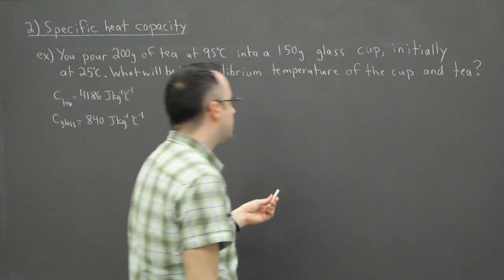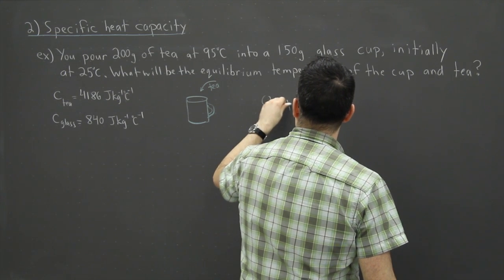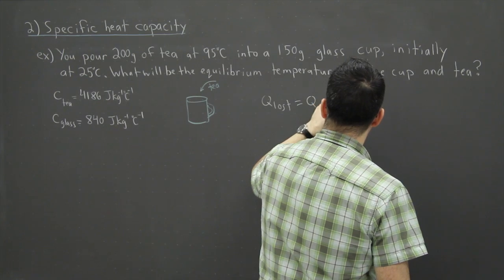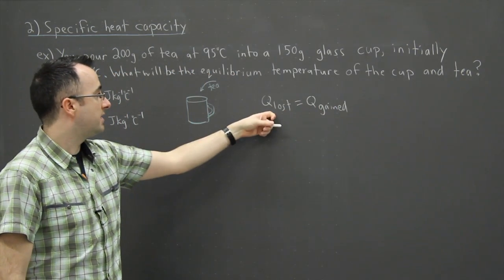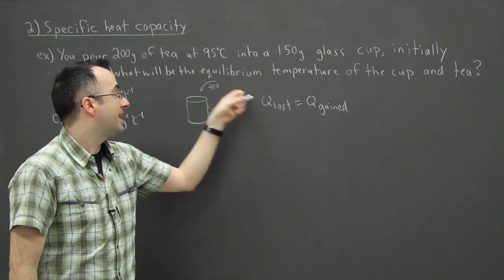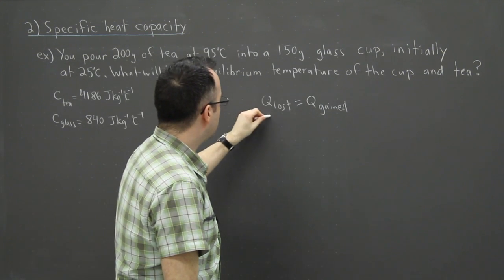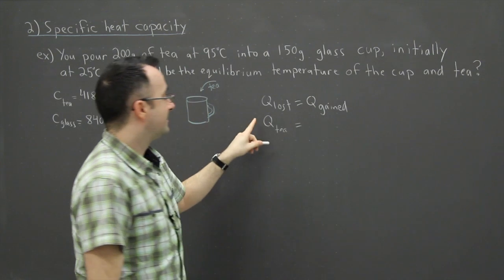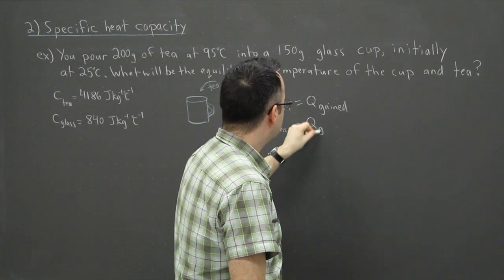Let's write this out. Q_lost equals Q_gained. Remember Q means heat. One of them loses energy, one of them gains energy. Which one loses energy? The one that goes colder after you leave it—that's the tea. The tea starts off hot and goes down in temperature. So Q_T equals Q_glass.